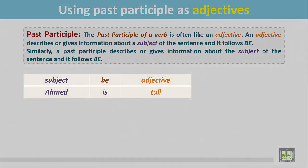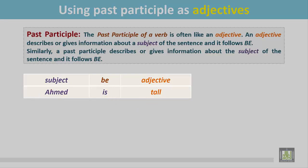Here is an example. The subject is Ahmed, and according to the subject and number, the be verb is 'is'. This be verb is followed by the adjective 'tall'. The adjective gives information about the subject Ahmed and describes the subject.